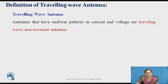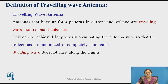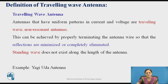The next type is the travelling wave antenna. Antennas that have a uniform pattern in current and voltage are known as travelling wave antennas. They are also known as non-resonant antennas. This is achieved by properly terminating the antenna wire so that reflections are minimized or completely eliminated to get better efficiency. The standing wave does not exist along the length; the wave is travelling and will not move back and forth in the transmission media. An example is the Yagi-Uda antenna.